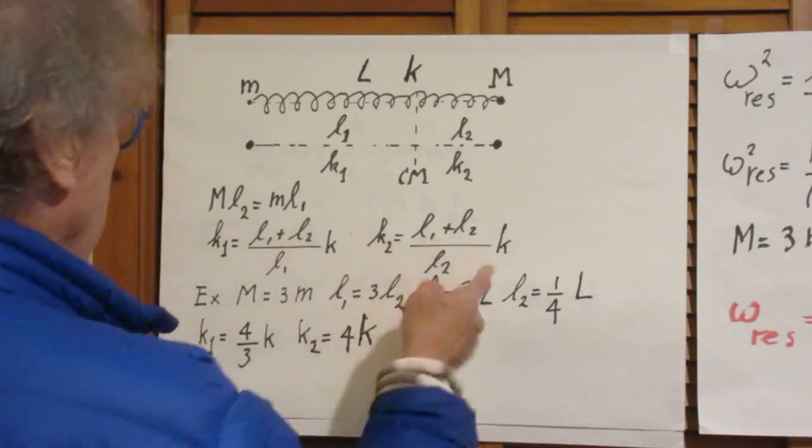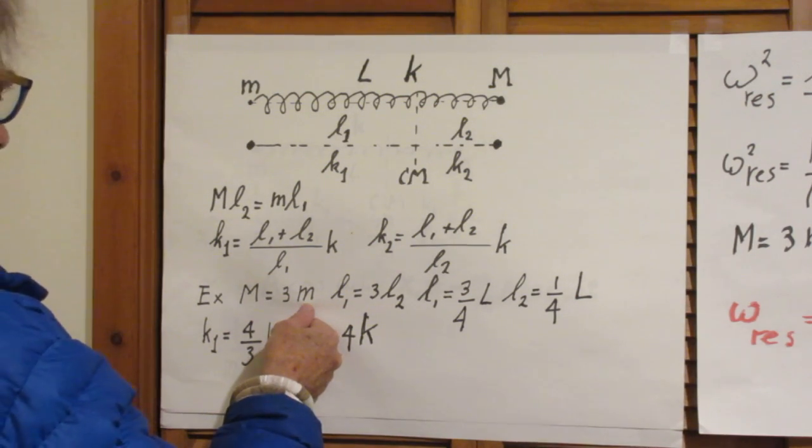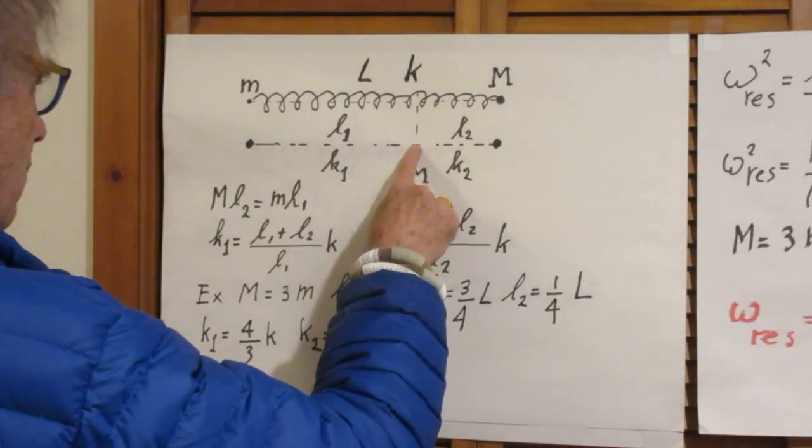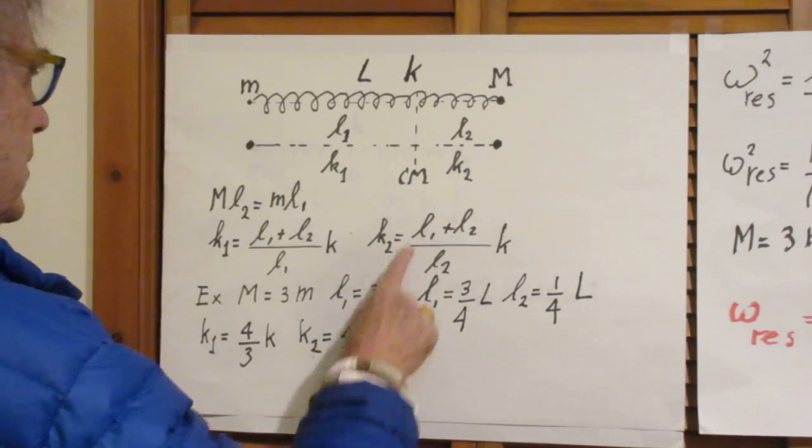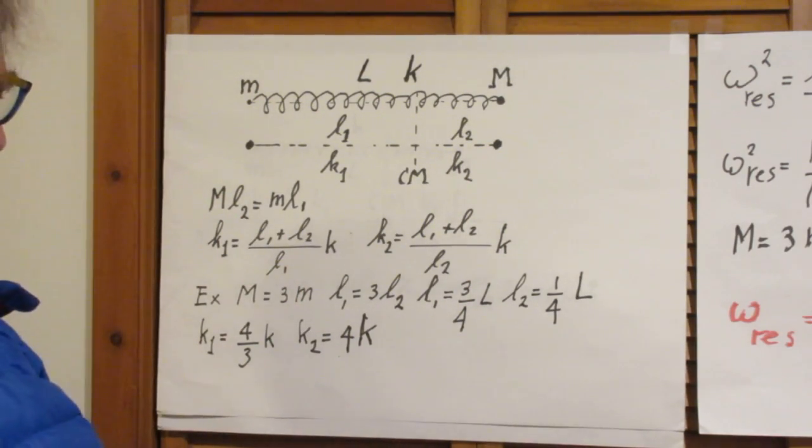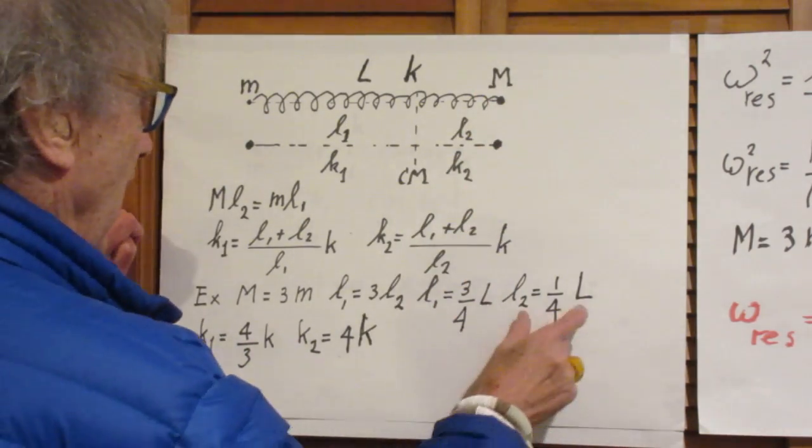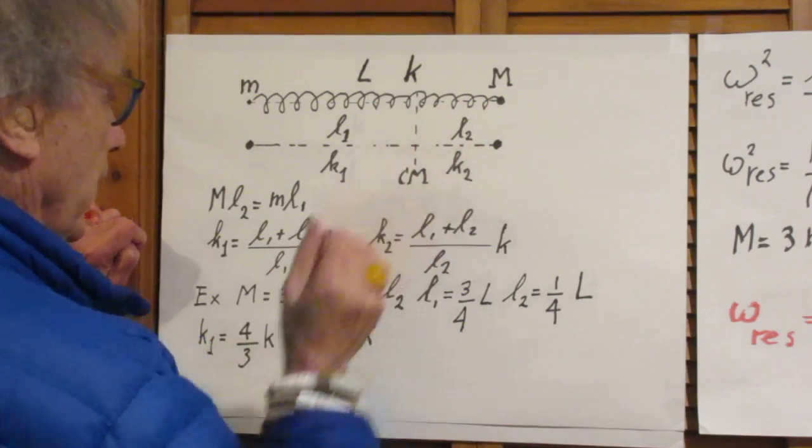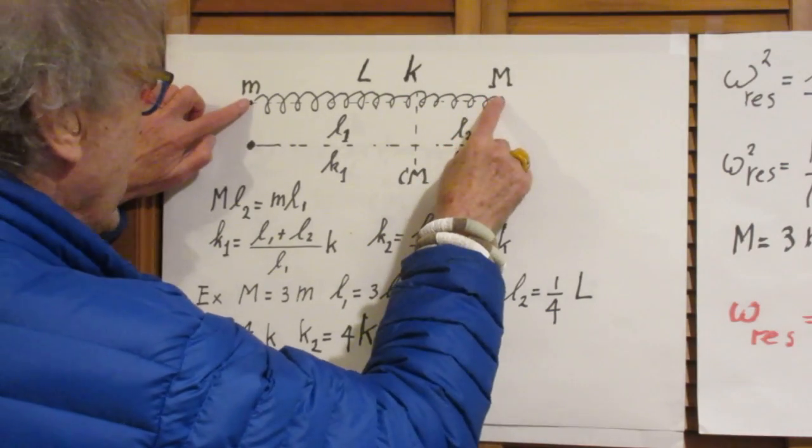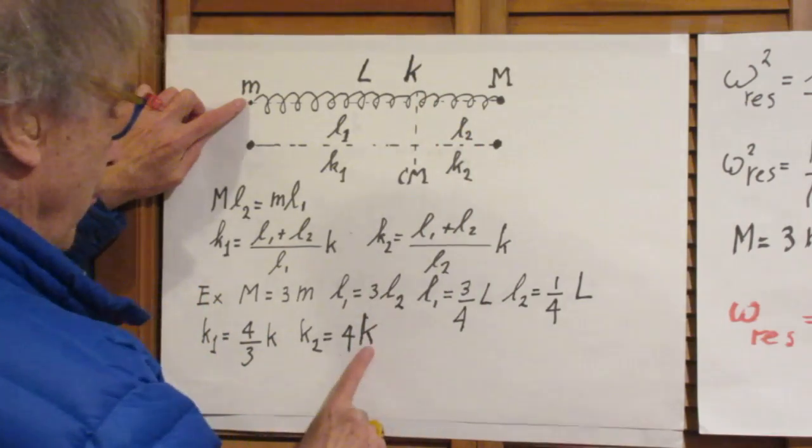So, let us take an example that capital M is 3 times little m. Then you can immediately appreciate the fact that L1 is 3 times L2 because ML2 is ML1. So L1 is then 3 quarters of the total length and L2 is only 1 quarter of the total length.